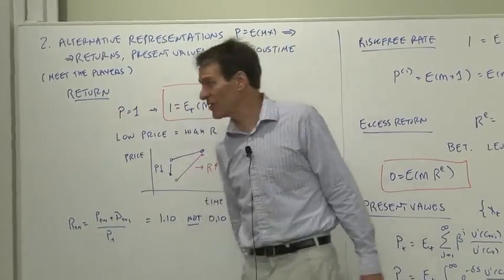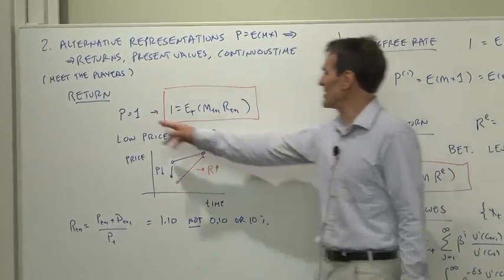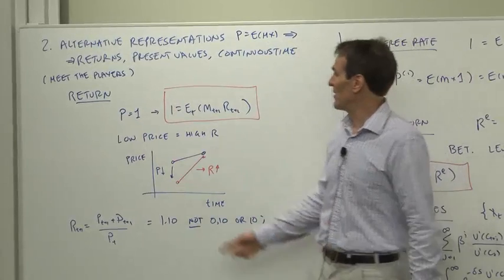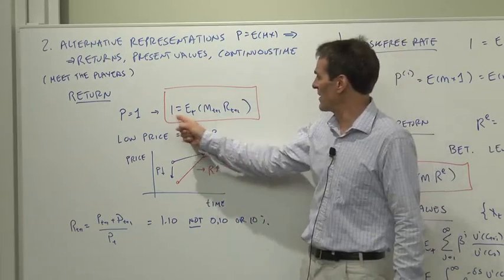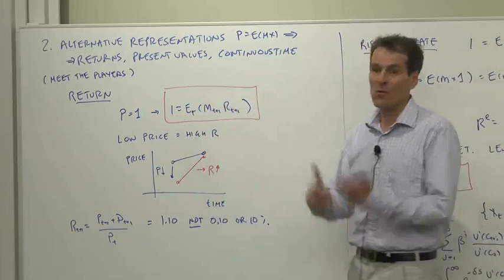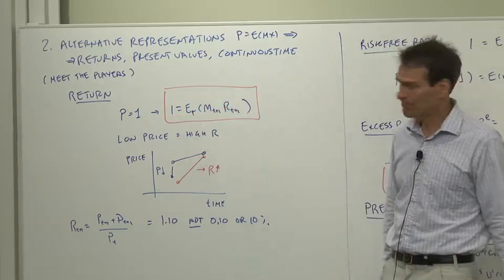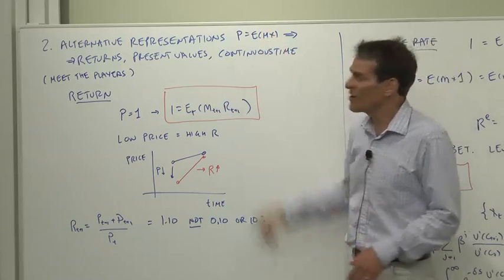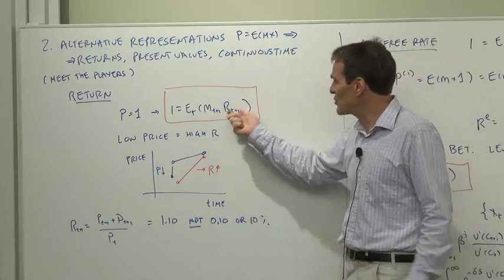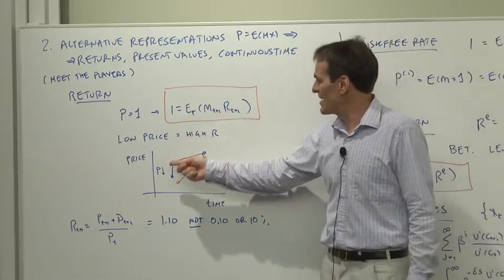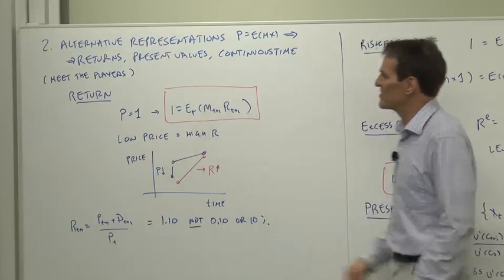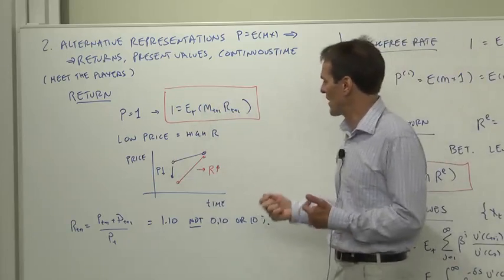So let's start with a return. Rate of return is just a price one security. You put in $1 today, and you get back what you get in the future. Therefore, price equals expected discounted payoff just reads one equals expected discounted return. So that's the version of our basic formula when the thing we're looking at as a return. Now we thought of this as mx determining p, and now r is in here. And you can think of this one also as determining the rate of return.